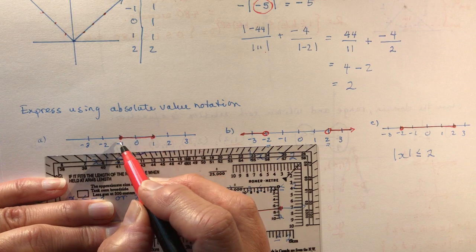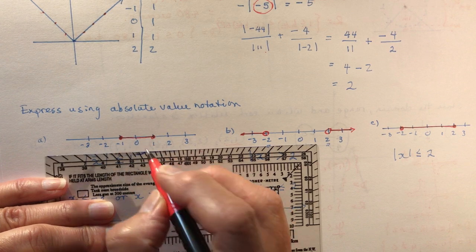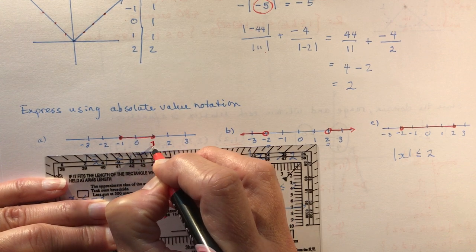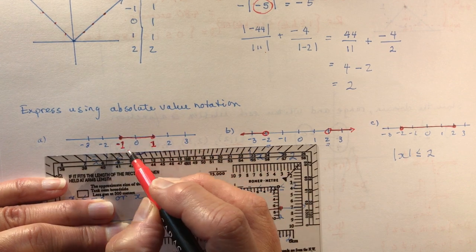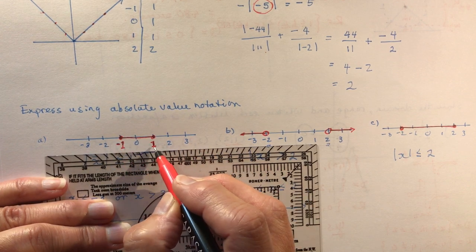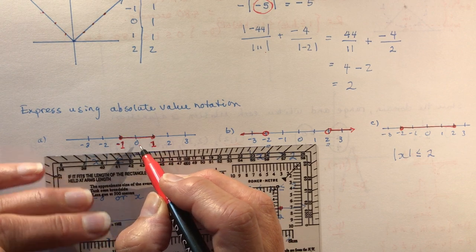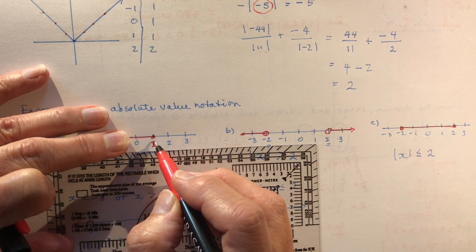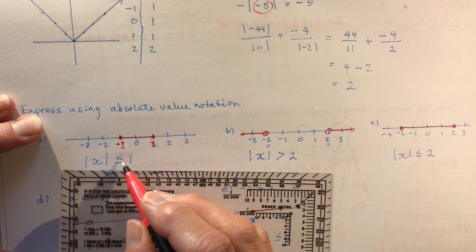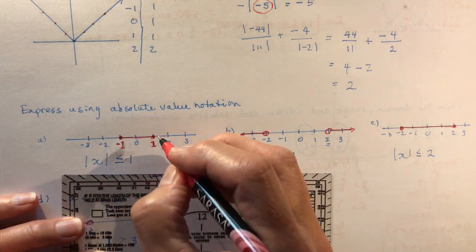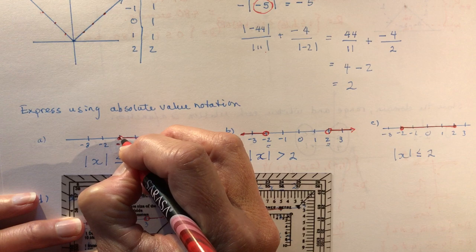So it's all the numbers between negative one and one. This is kind of your key here. If the graph is symmetrical between these two values, just look at this one and look at how far it is from zero. So this is less than one. I write absolute value of x less than or equal to—equal to because these are solid circles.